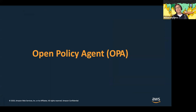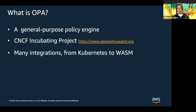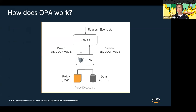OPA, the Open Policy Agent, is a general purpose policy engine — a CNCF community project with many integrations, from Kubernetes where it's pretty well known to others. If you hear 'general purpose policy engine' for the first time, you probably wonder what that means — it sounds abstract. So let's look at concrete examples of the way it works. You supply OPA with a policy and some data in JSON format, and it applies the policy to produce some output value.